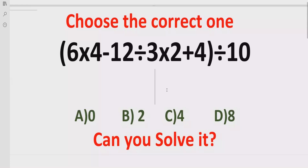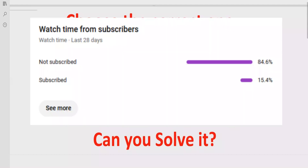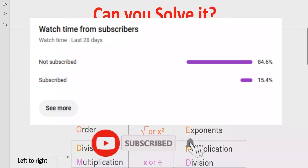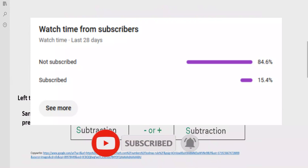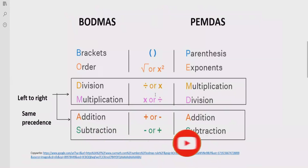Before starting the video, please like and subscribe to my channel and share with others so they can learn these types of quizzes. Now just recall the rules we follow to solve the given expression. Here we will discuss two rules called BODMAS and PEMDAS. These rules can be applied to solve any arithmetic expression. The rule says: if your expression contains any bracket or parenthesis, you have to solve that part first.